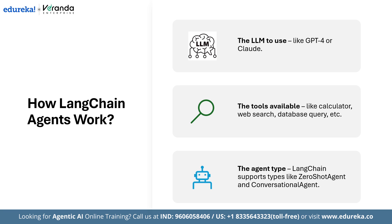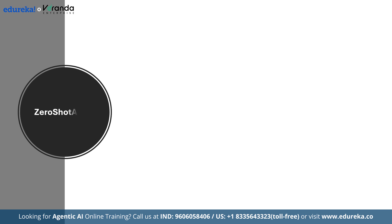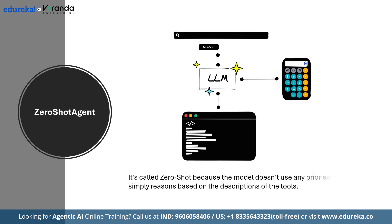Now that you understand how Langchain agents work, let's talk about the two most popular types. First is the zero-shot agent — the most commonly used. It works by giving the language model a list of tools along with a description of what each tool does. The model then figures out on the fly which tool to use and in what order. It's called zero-shot because the model doesn't get examples; it just reasons based on the tool descriptions. It is best for tasks that don't need memory or back-and-forth conversation — like data lookups, calculations, or API calls.